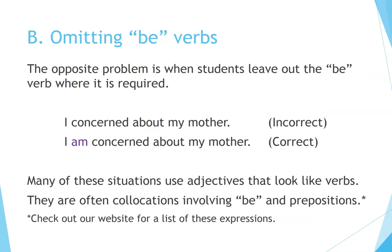B. Omitting B verbs. The opposite problem is when students leave out the B verb where it is required. For example: 'I concerned about my mother' — incorrect. 'I am concerned about my mother' — correct. Many of these situations use adjectives that look like verbs. They are often collocations involving B and prepositions — check out our website for a list of these expressions.